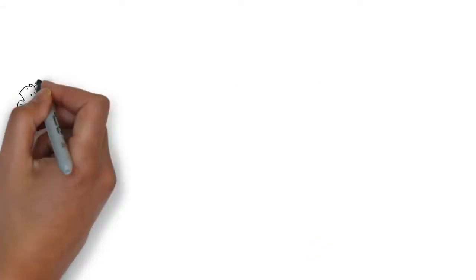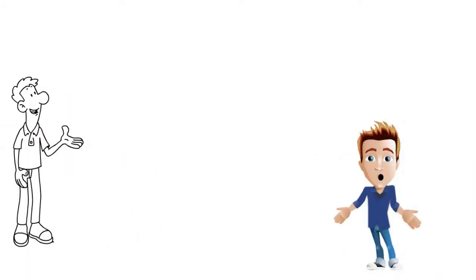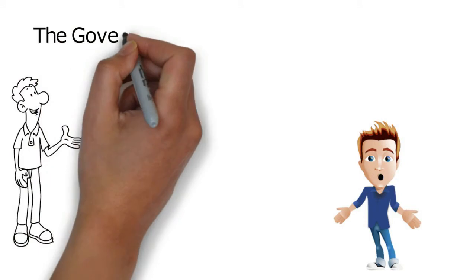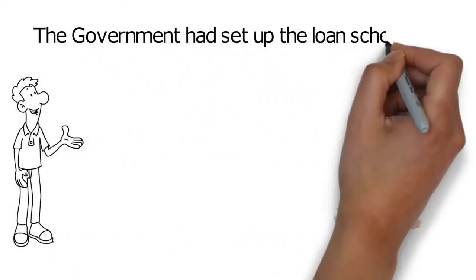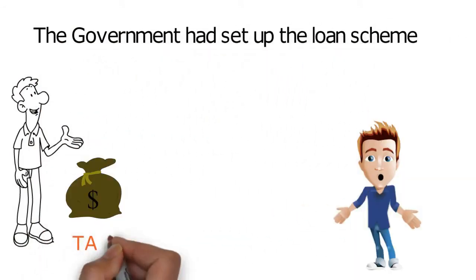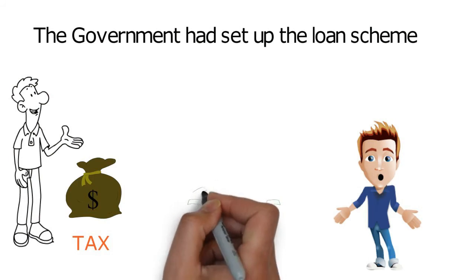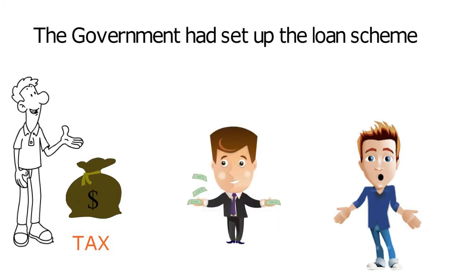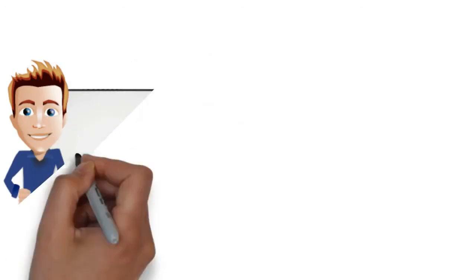Sam asked about his student loan. This is a tricky one, said Dave. The government had set up the loan scheme in such a complicated way that it actually works more like a tax. For Sam, for others who had a smaller loan or earned more, it would be worth paying back earlier, but not Sam.